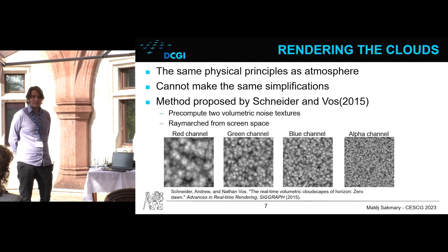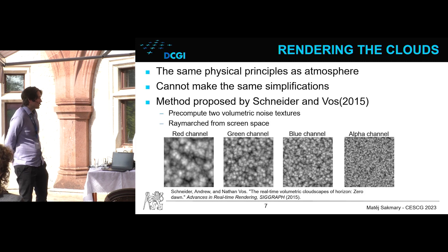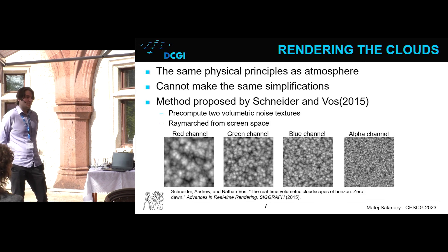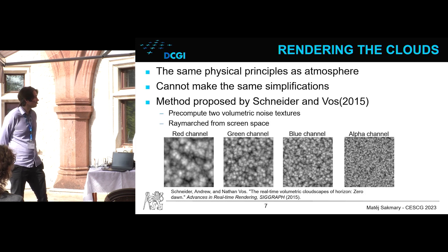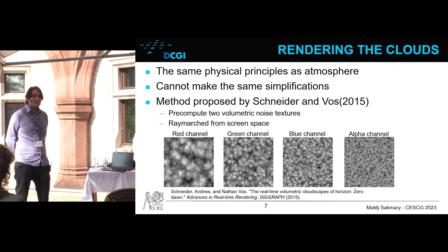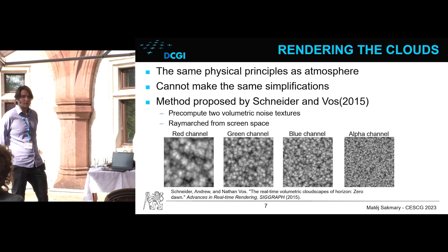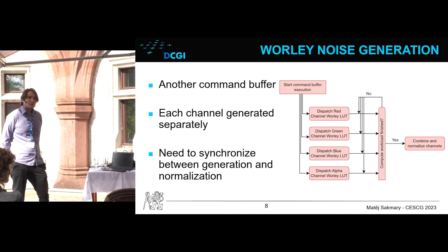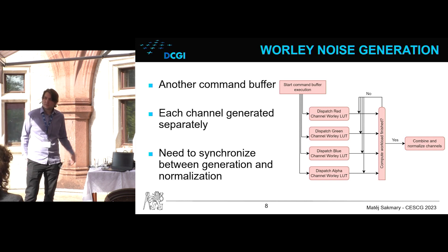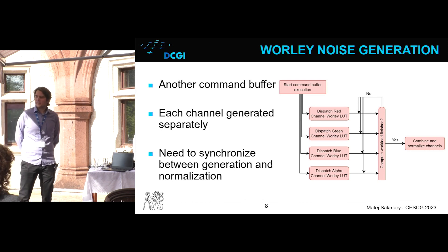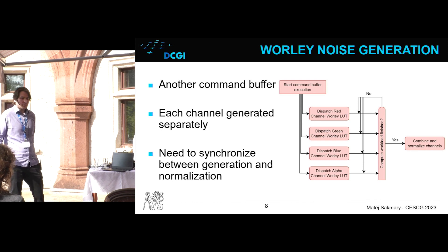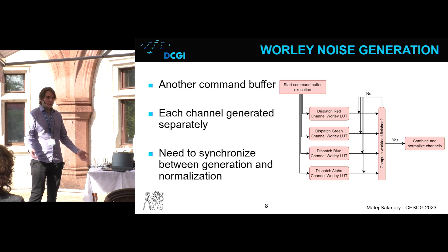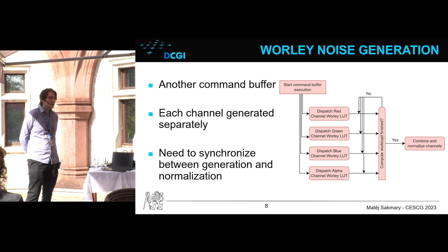Instead, we use a method proposed by Schneider and Voss. We use two volumetric noise textures to model the clouds. The first is of higher resolution and models the base shape of the clouds. The second, low-resolution one, erodes the edges of these base shapes to create the high-frequency visual detail. Each noise texture has four channels, and each channel stores inverted Worley noise of varying frequencies. We use this to model the density of the clouds when ray-marching the cloud layer. The noise textures are generated once at startup using a single command buffer, since the calculation can be quite expensive. Each channel stores independent frequencies, so we generate them independently and synchronize once before normalizing and combining them into a single four-channel texture.